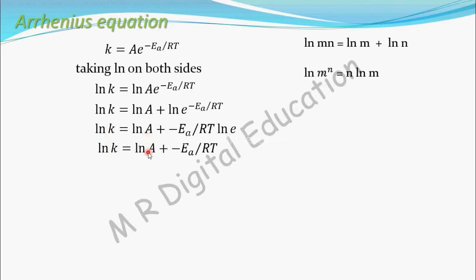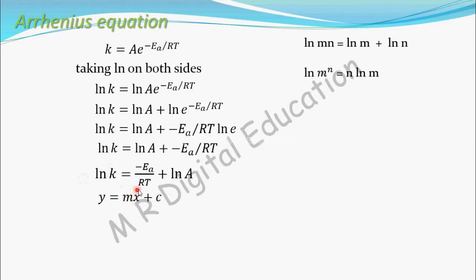So what you get is: ln K equals ln A minus Ea by RT. This equation is looking like Y equal to MX plus C. Here Y is ln K, the slope M is minus Ea by R, the variable X is 1 by T, and the intercept on the Y axis is ln A.